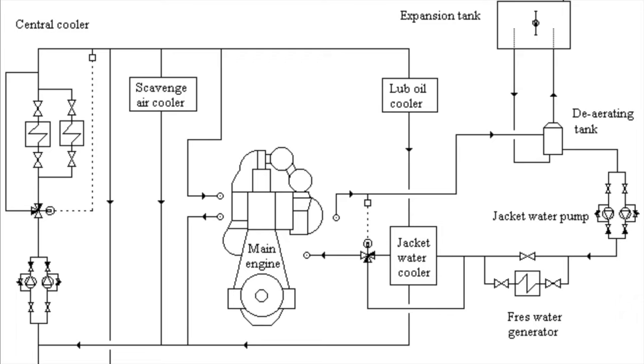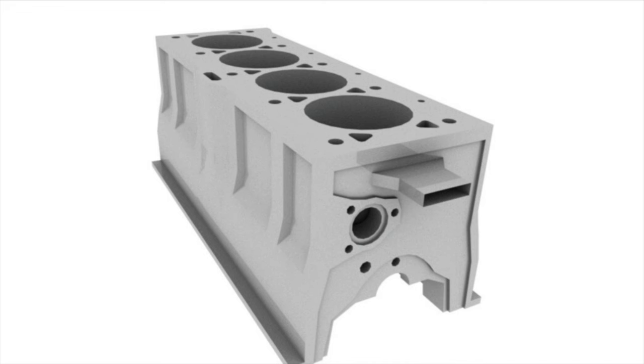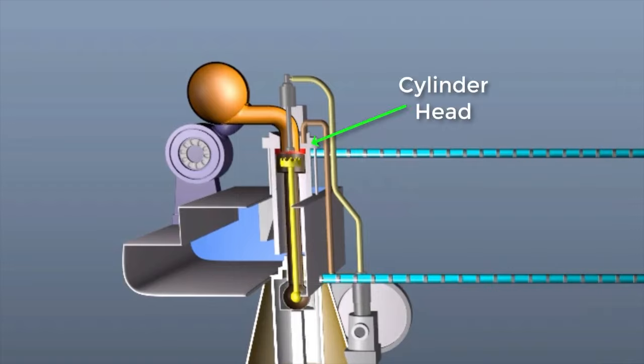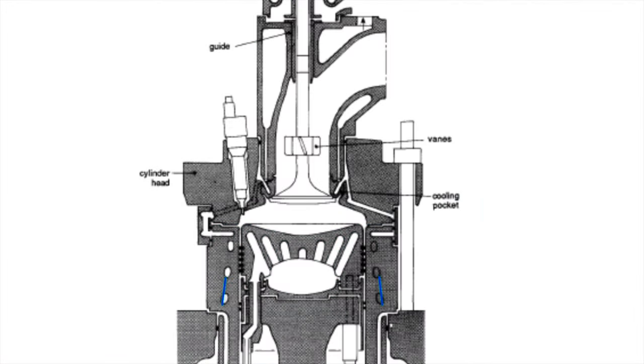The main engine jacket cooling water system comprises of several components which work together to cool down the hot engine parts. The main engine entablature is the uppermost part of the engine which carries the cylinder heads on top and fits the liners. It is provided with cooling water spaces which are grooved around the liner and a connection is provided to connect the cylinder head for the ease of water passage through it.